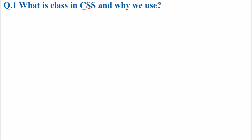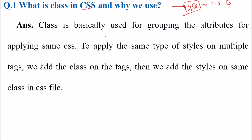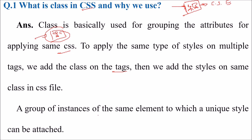What is a class in CSS and why do we use it? In your school or college there is a class — for example, a class of computer science engineers where all those to be taught computer science subjects are placed. CSS also does that. A class is basically used for grouping elements and applying the same CSS to all elements within that class. To apply the same type of styles on multiple tags, we add the class on the tags and then add styles for that class in the CSS file. In short, a class is a group of instances of the same element to which a unique style can be attached.